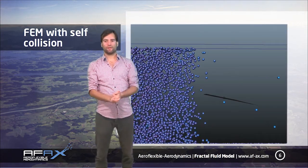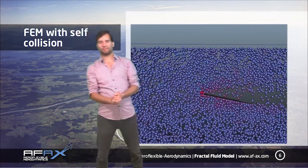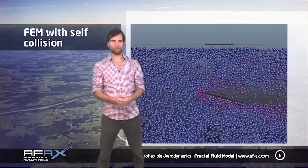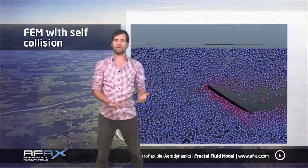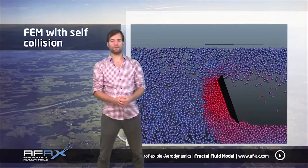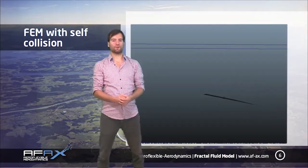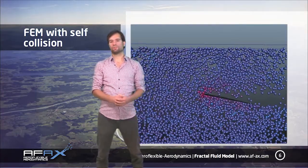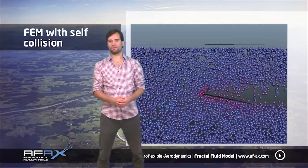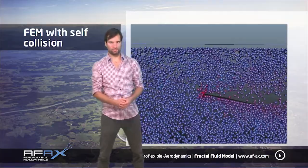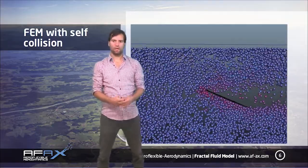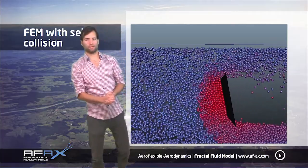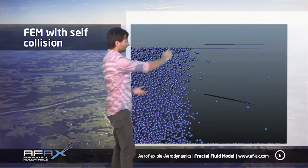If we add self-collisions to the elements it's getting closer to what we would expect. Imagine a stream of sand particles that flows around the wing — only collisions and self-collisions deflect the particles. We still have a vacuum area in the wind shadow but it closes already a bit.